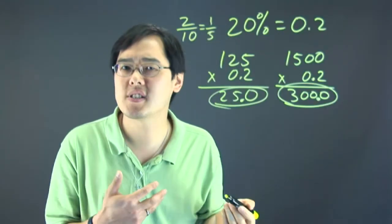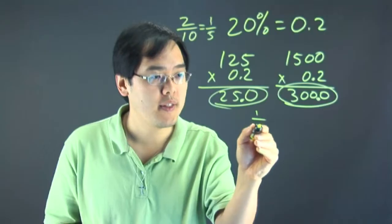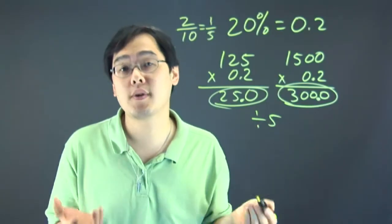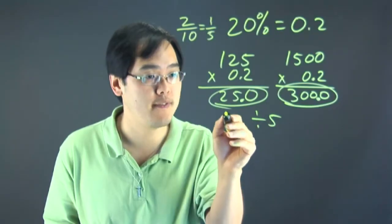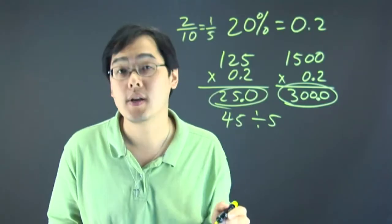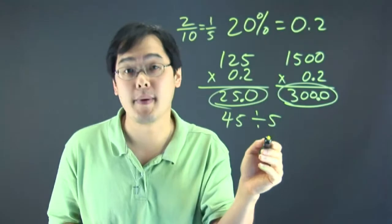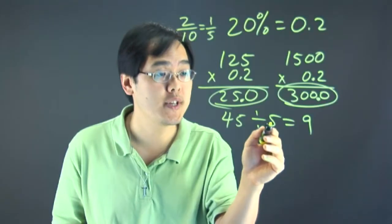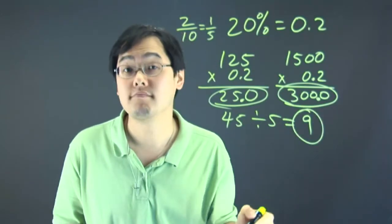But in actuality, you're just dividing by 5. So that's another math trick. So you want to find out 20% of 45. Just take 45 and divide by 5, which is 9. So 20% of 45 is 9.